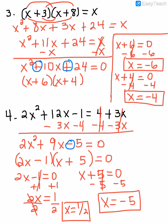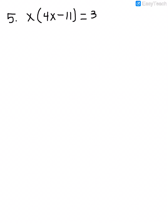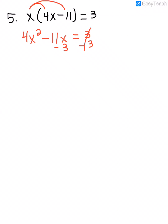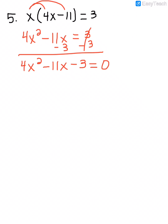Those are my two solutions for this quadratic equation. In the last example, I need to get everything over to one side. But if there are parentheses, I need to get rid of them first by distributing the x, giving me 4x squared minus 11x equals 3. Then I subtract 3 from both sides, giving 4x squared minus 11x minus 3 equals 0. This is a quadratic equation with a leading coefficient other than 1, so I'm going to use the grouping method.